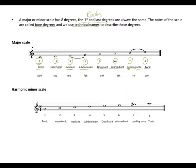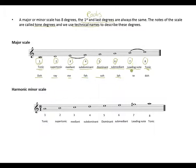Remember the first and last degrees are the same — tonic and tonic. In solfège: the first degree, tonic, is Do. The second degree, supertonic, is Re. The third degree, mediant, is Mi. The fourth degree, subdominant, is Fa. The dominant is So. The sixth degree, submediant, is La. The leading note, the seventh degree, is Ti. And your tonic again is Do.